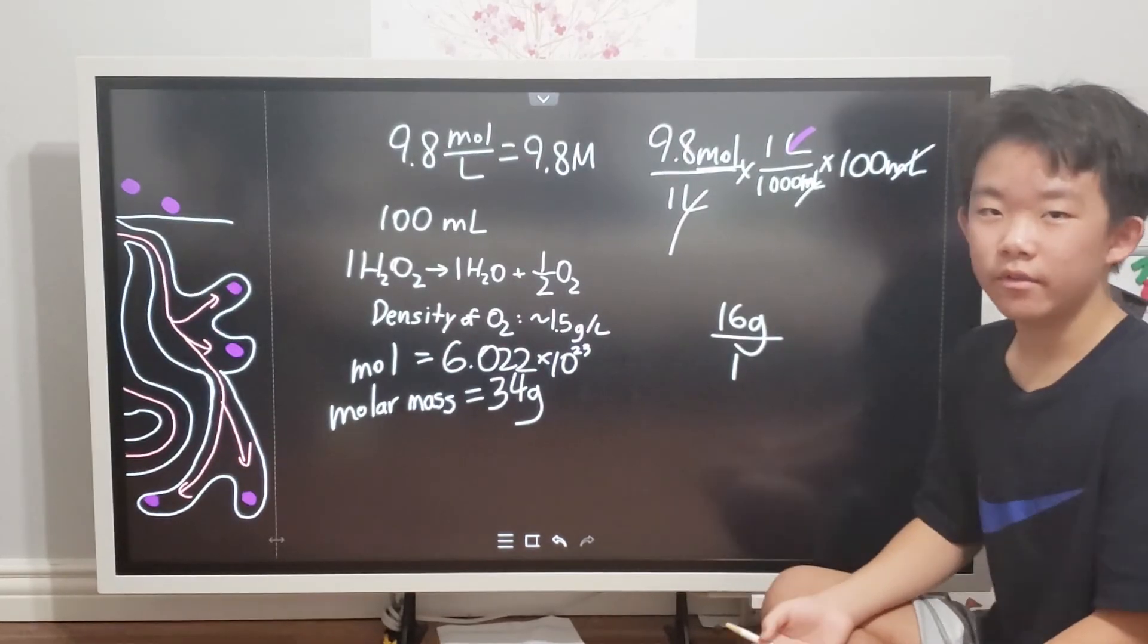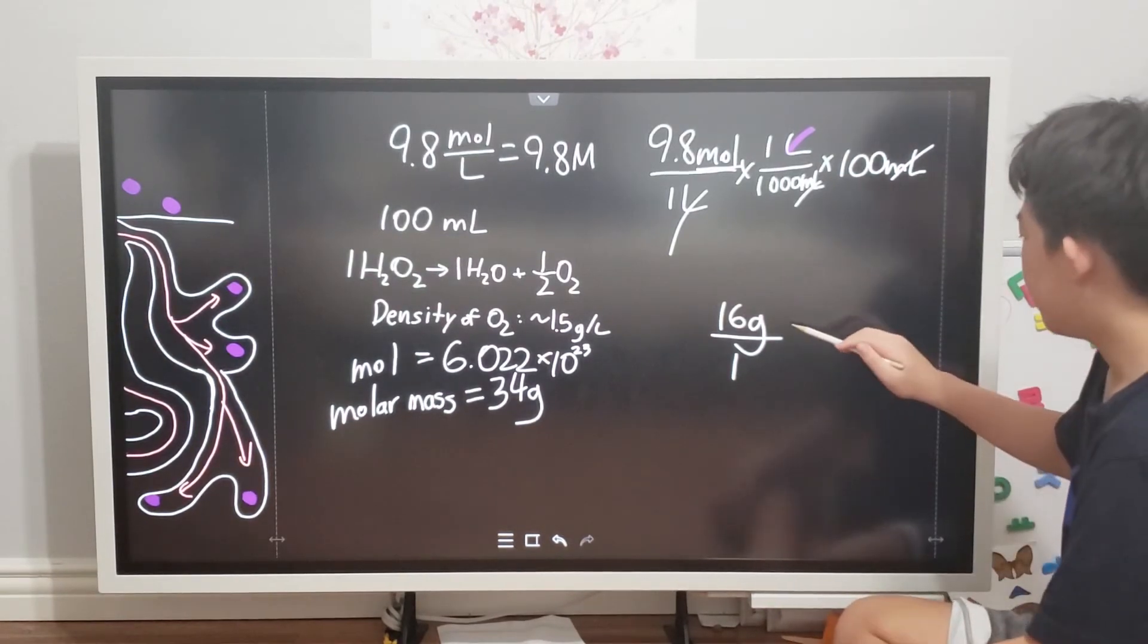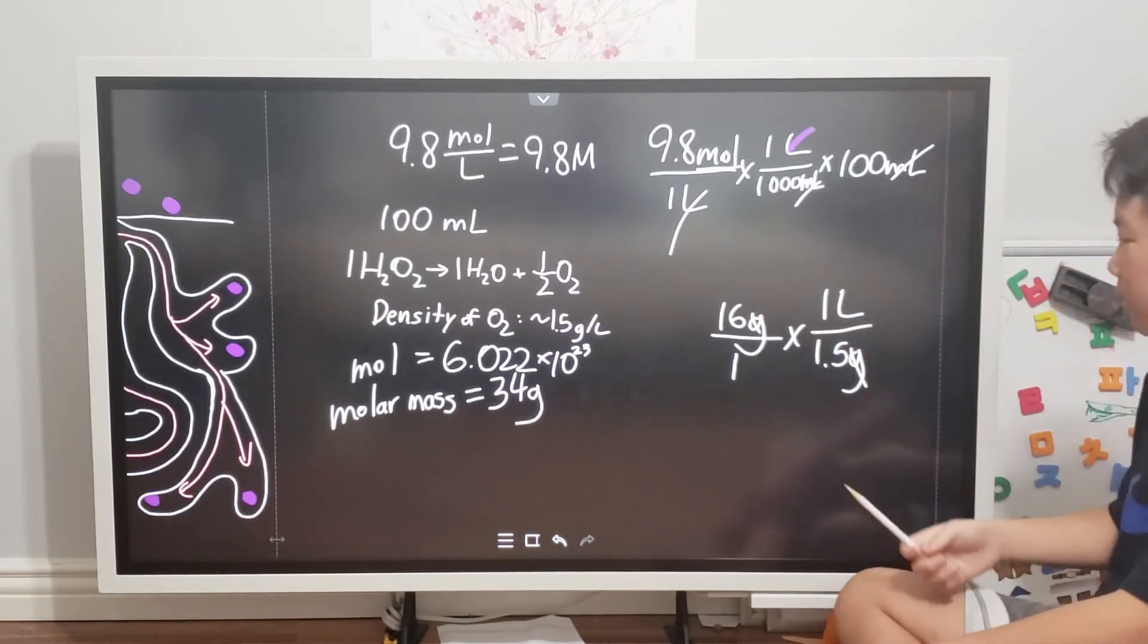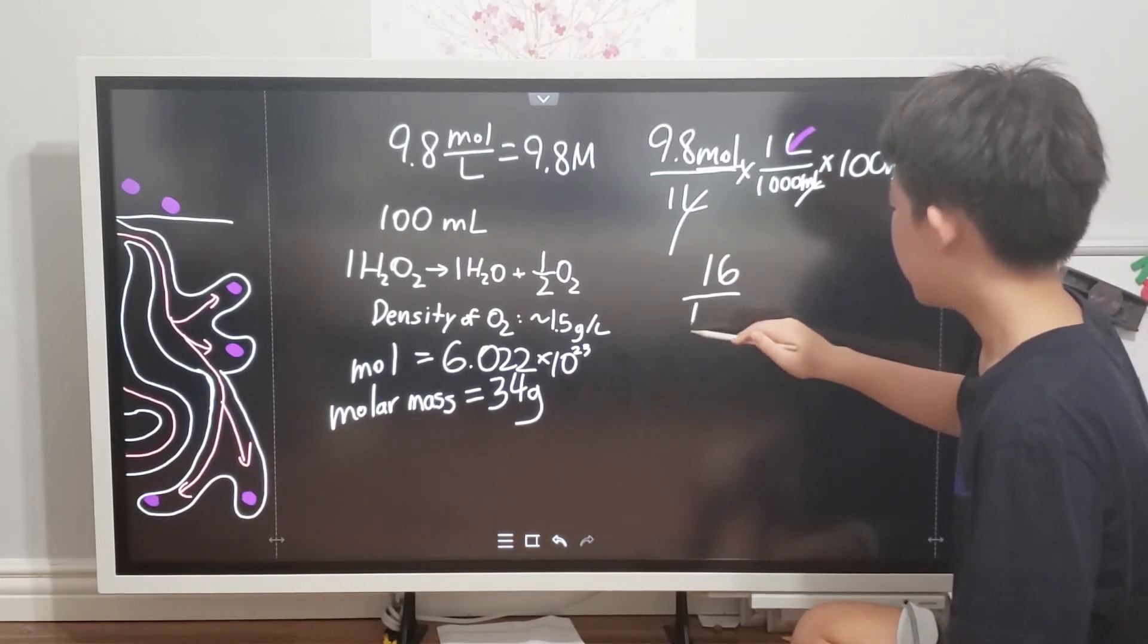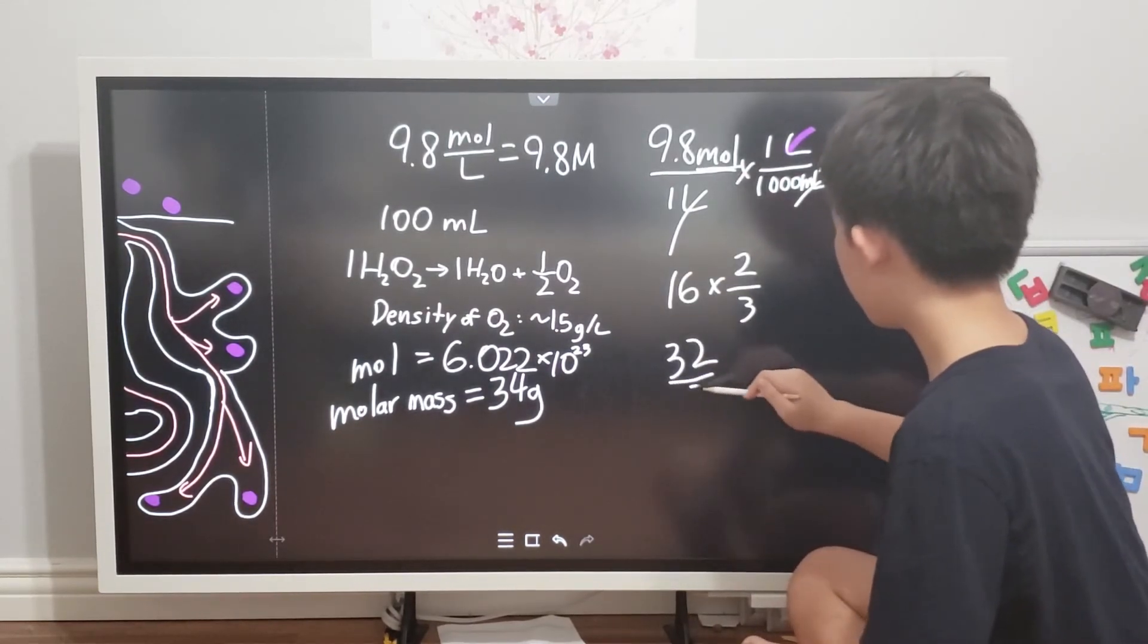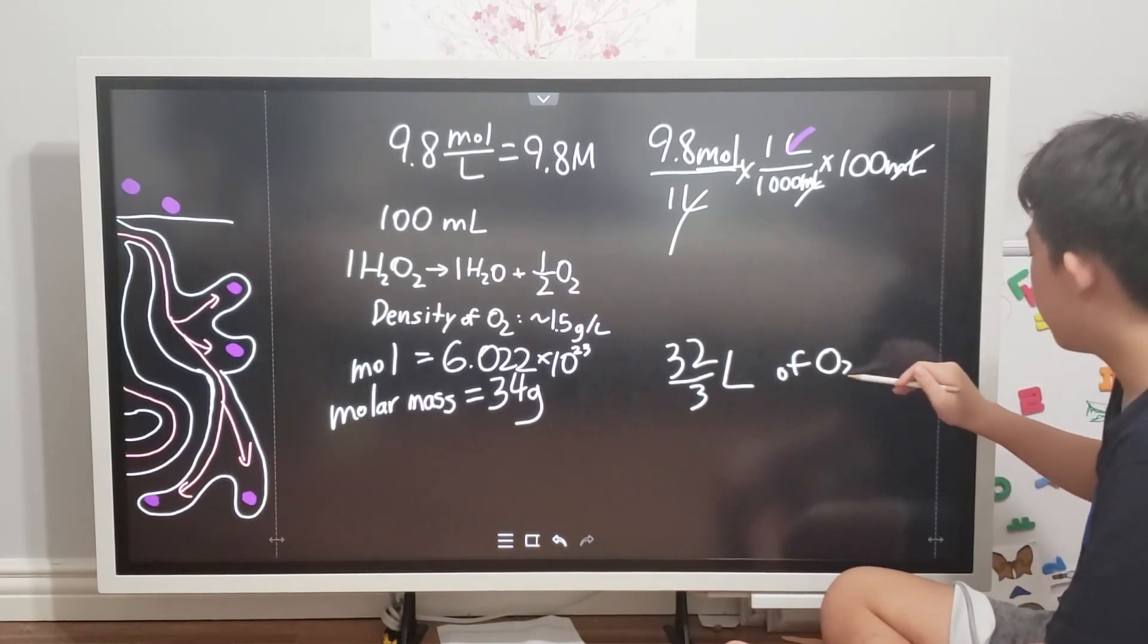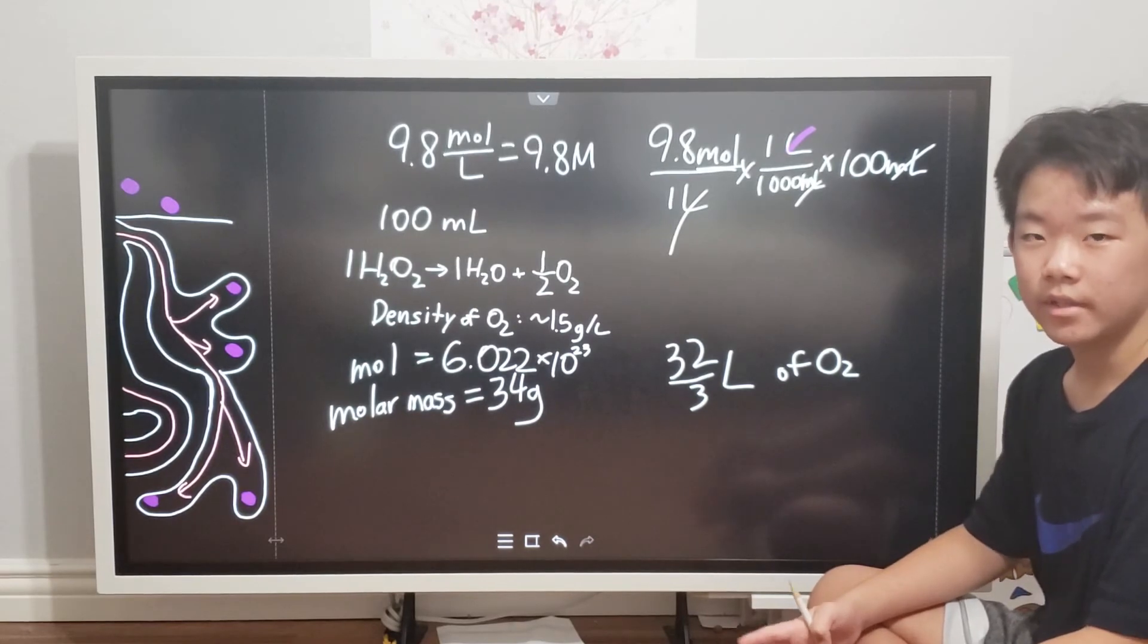Which would make, instead of 1.5 grams per liter, we would have 1 liter per 1.5 grams. The grams cancel and leaves us only with liters. We divide 16 by 1.5. Okay, so I calculated that 10.7 liters of oxygen was produced. That divided by 3 liters is close to 11, which is exactly what I said at the beginning.